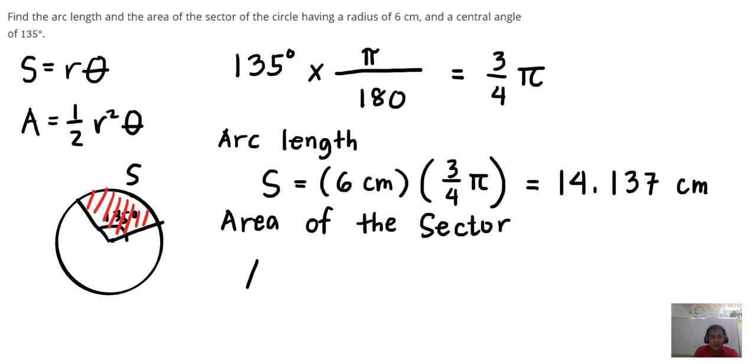So area, using the formula, is 1 half r squared theta. So this is 1 half times 6 cm squared and then theta is 3 over 4 pi.